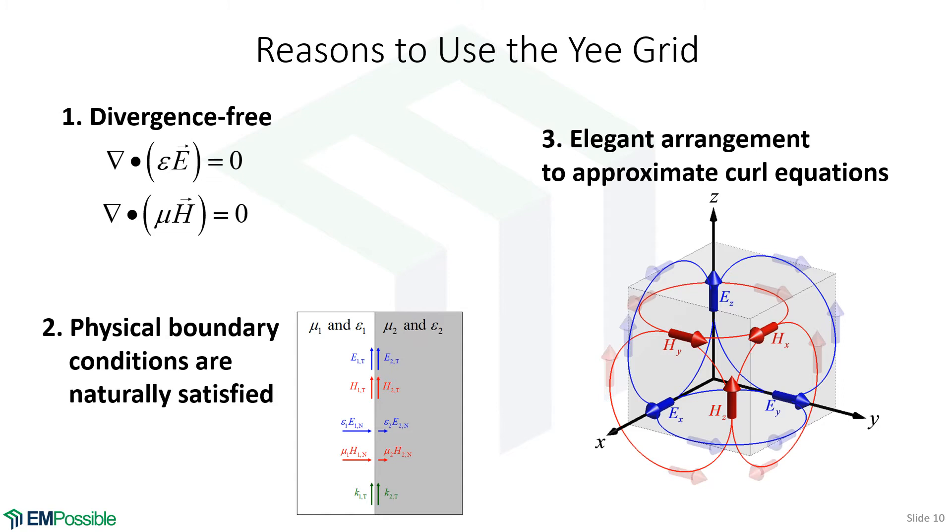And the last, it's a very elegant arrangement for approximating the curl equations. The hint is that if we're calculating the curl of the magnetic fields around an electric field, all the magnetic fields that we need for calculating the curl are immediately adjacent to it. Likewise, if we are sitting at a magnetic field and we need to curl the electric fields, all the electric fields that we need are sitting adjacently to it. These little faded out vector components are from adjacent cells. Very elegant arrangement.